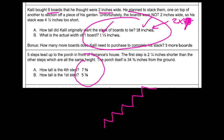The first step is two and a quarter inches shorter than the other steps, which are all the same height. The porch is 34 and five eighths from the ground. How tall is the fourth step? How tall is the first step?